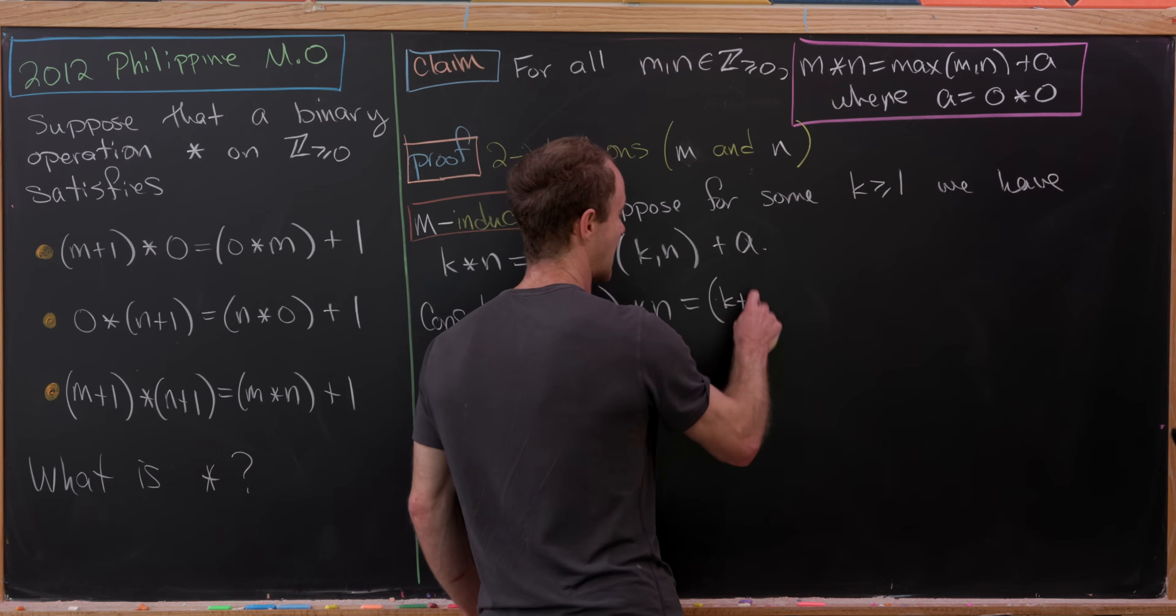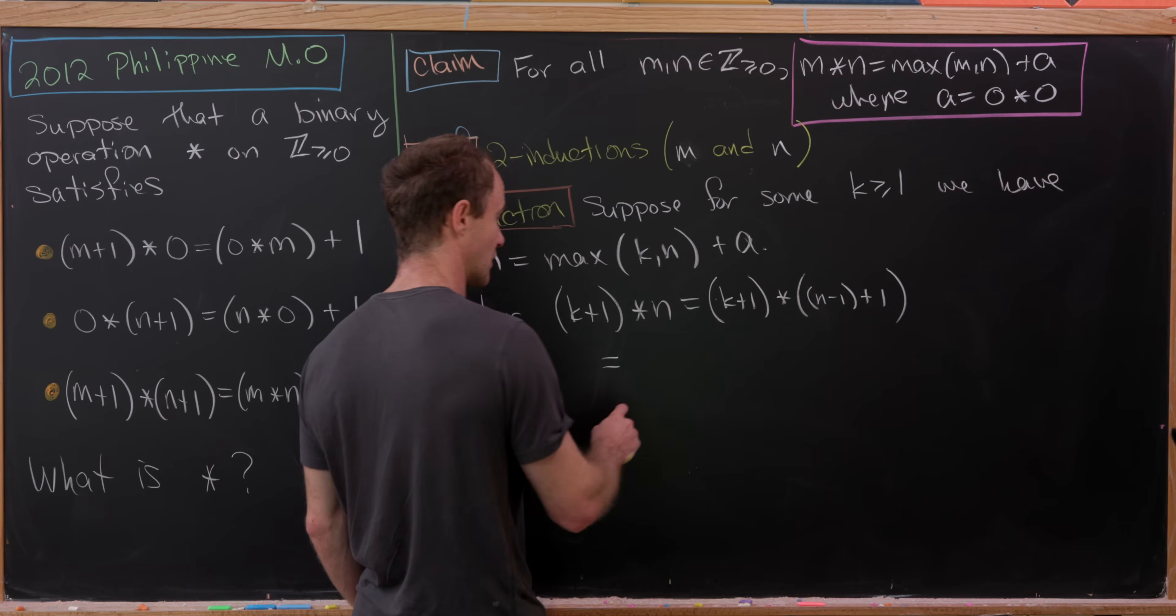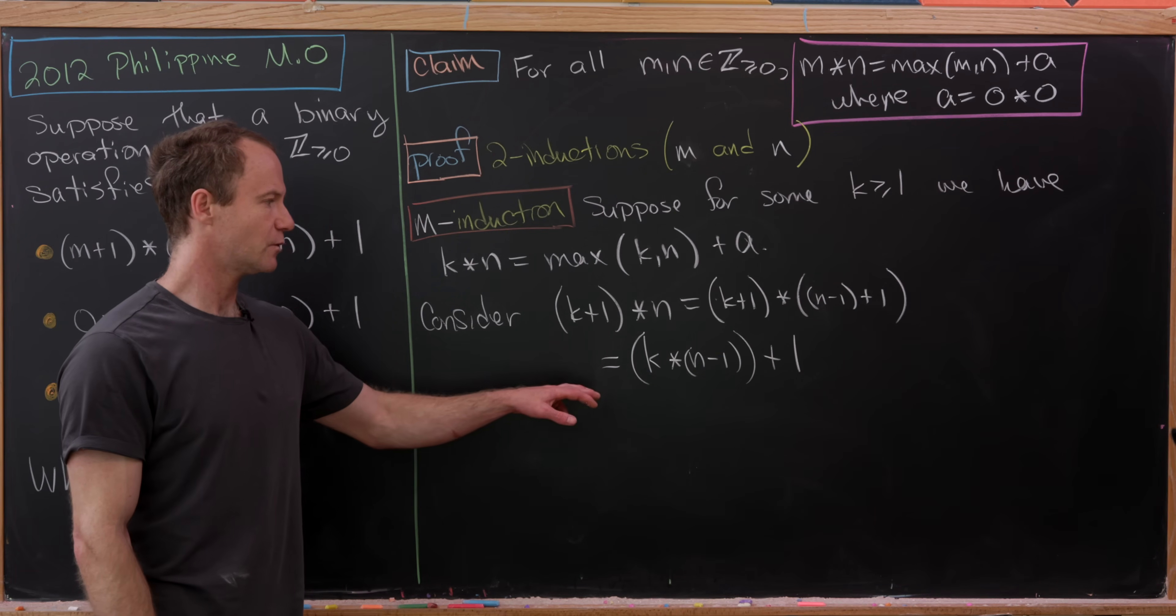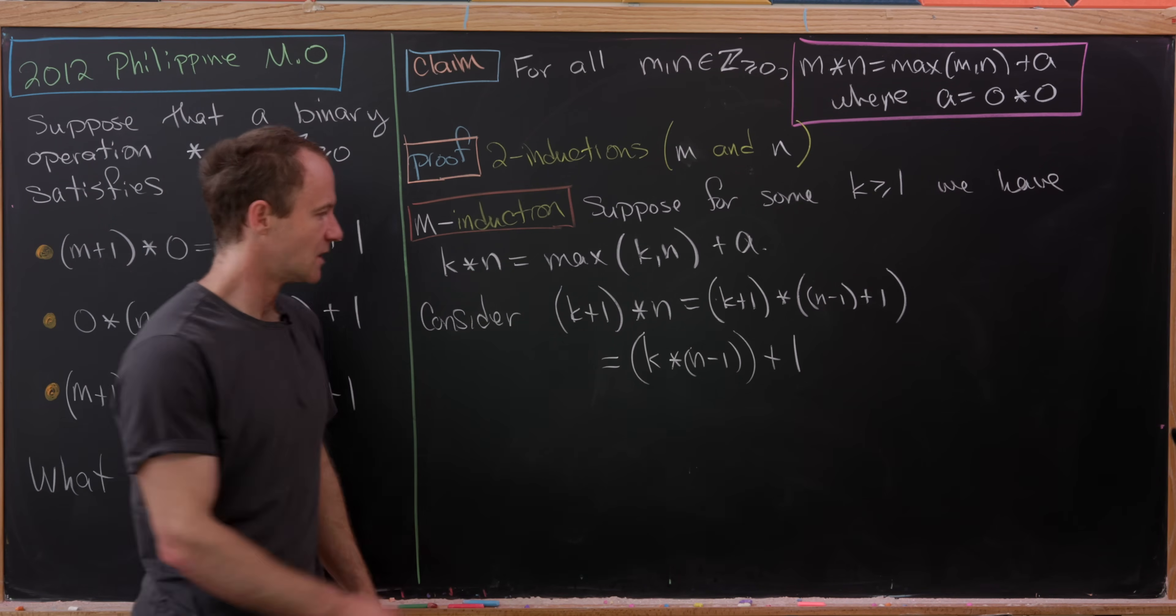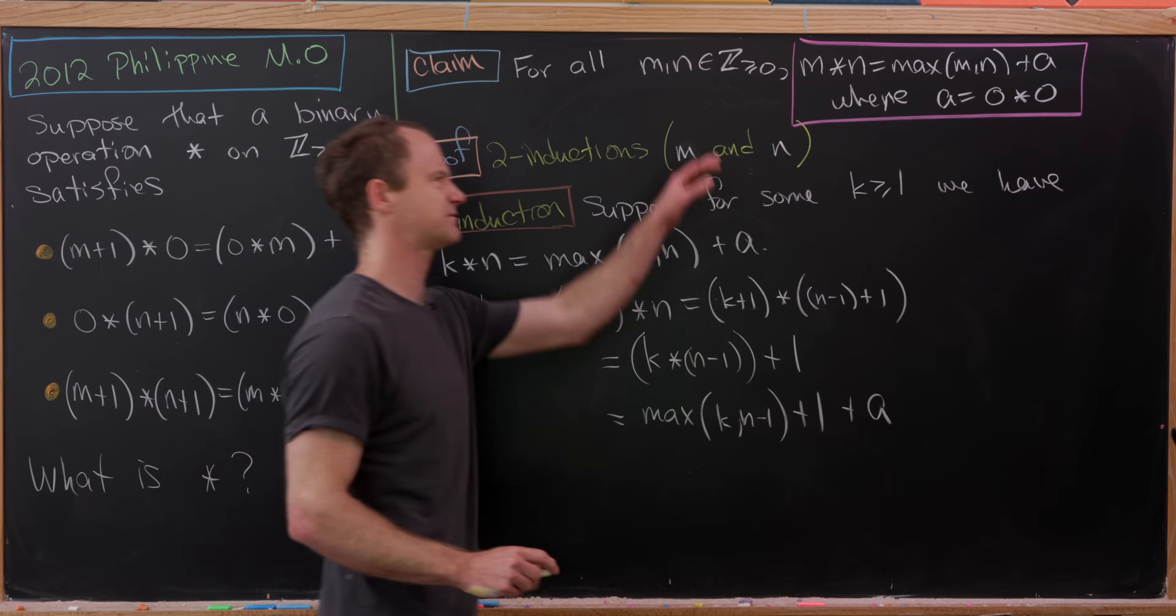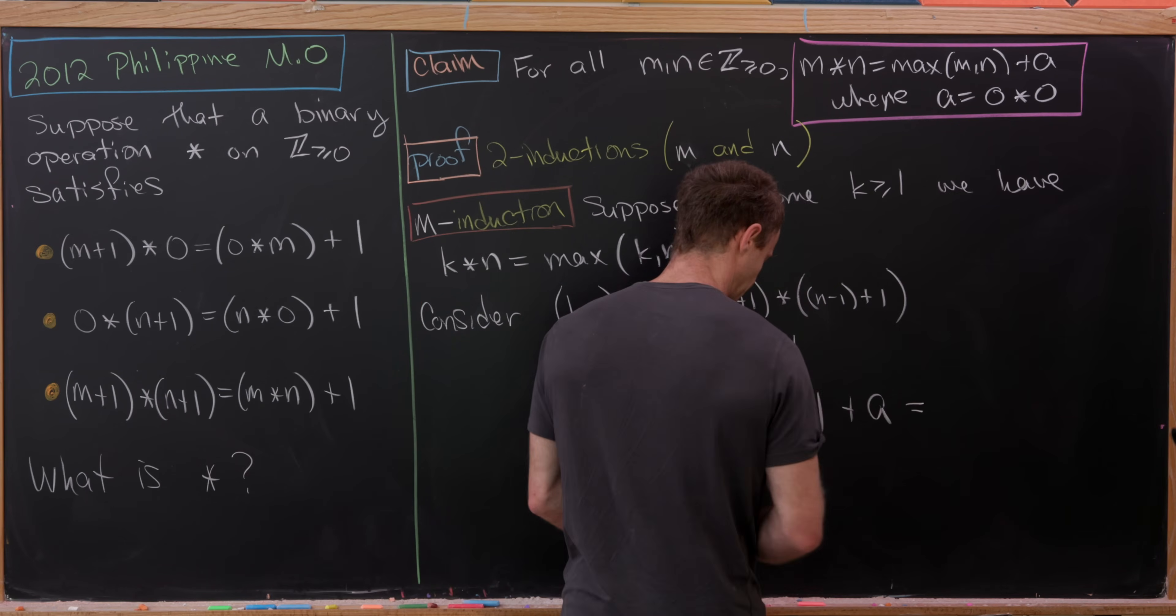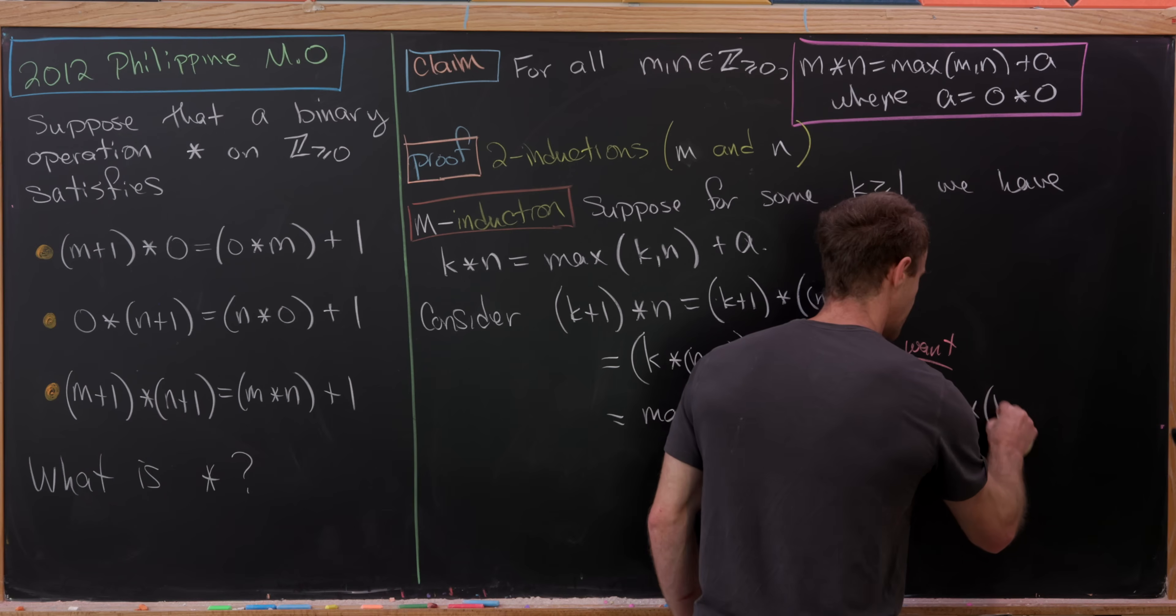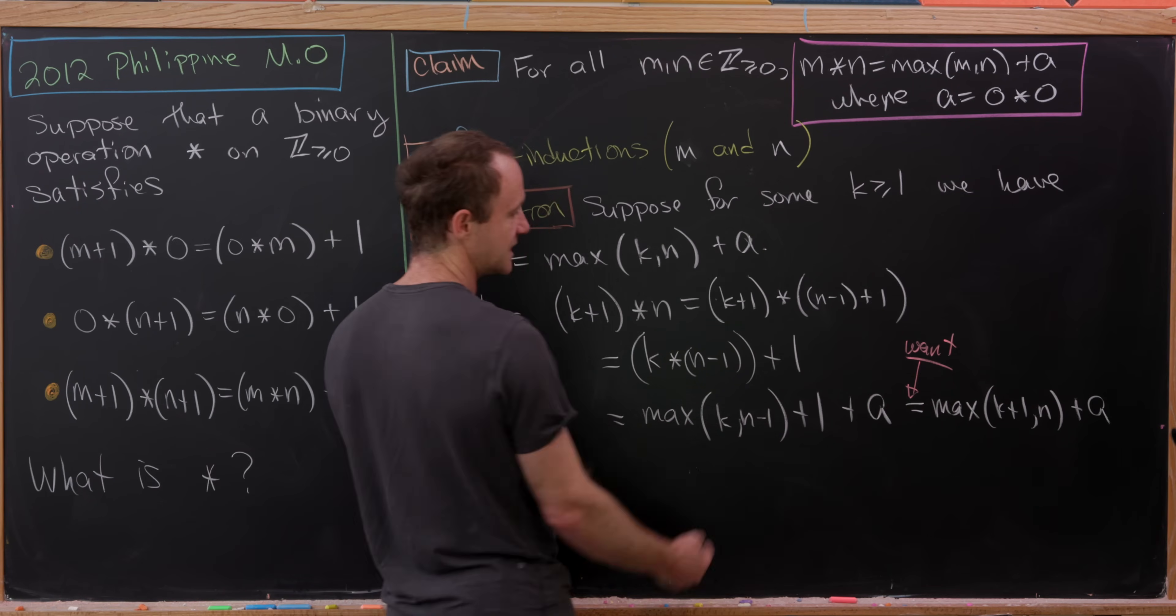In that case, we can write this as (k+1) star (n-1+1) and then apply this rule here. Applying this rule will leave us with k star (n-1) + 1. We can apply the induction hypothesis to this because it's supposed to hold for all entries n. That should give us the maximum of k with n-1 + 1 + 1, and then plus a which just comes along for free. Now let's notice what we want this to be equal to. I'll put this over here and note that we want this to be true. We want this to equal the maximum of k+1 with n plus a. Somehow we need to combine this +1 on the outside to being that sort of object over there.